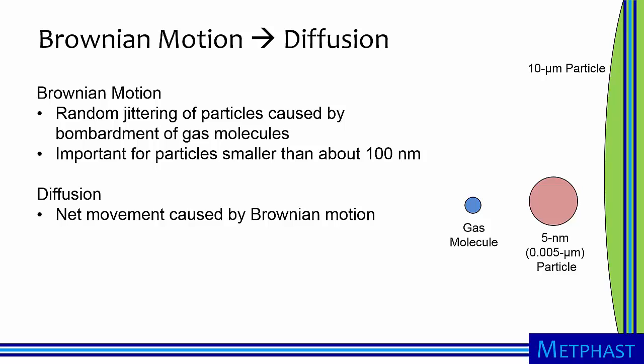Brownian motion leads to diffusion, which is the net movement of particles away from where they started.